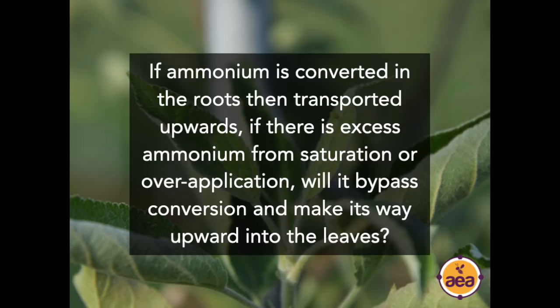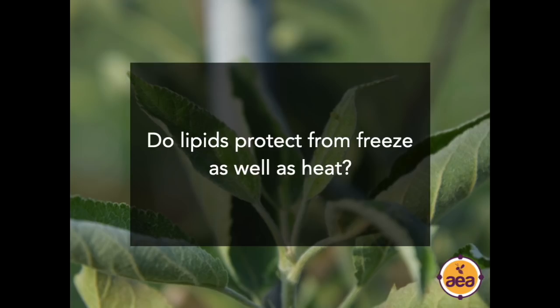Question from Jason Limon: if ammonium is converted in the roots then transported upwards, if there is an excess from saturation or over-application, will it bypass conversion and make its way upward into the leaves? Yes, that is correct. That is what I described as overwhelming the root system's capacity to convert — there's simply too much volume coming in, the root system can't metabolize it at all, it bypasses the root system and goes up into the canopy and accumulates in the leaf in the ammonium form.